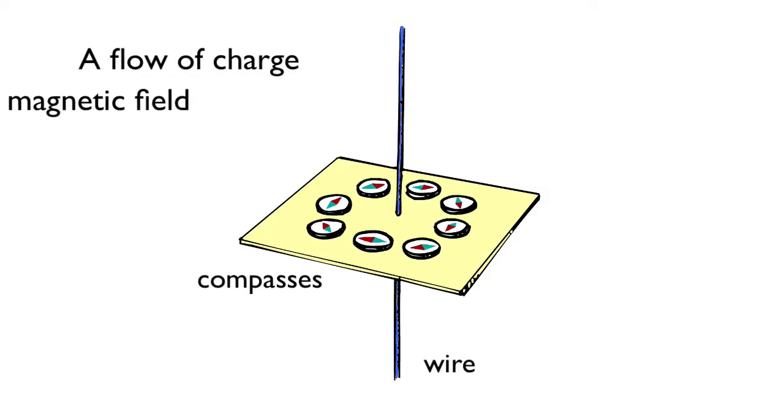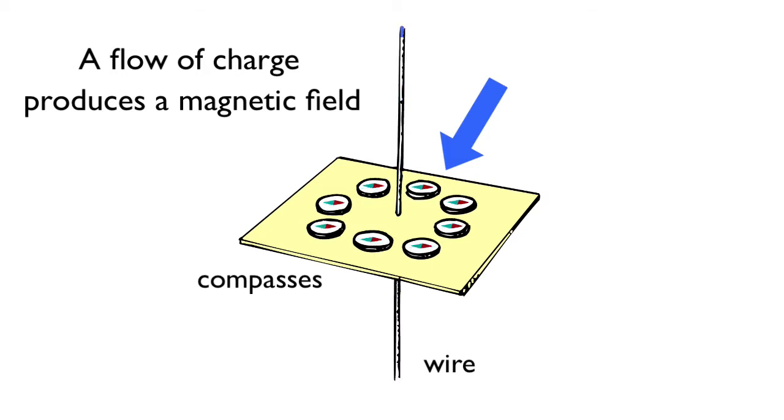So a flow of charge produces a magnetic field, as evidenced by these compasses. And watch what happens when we reverse the direction of charge flow. The polarity of the magnetic field also reverses direction.